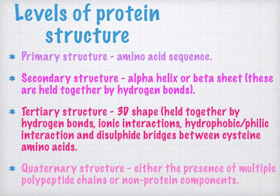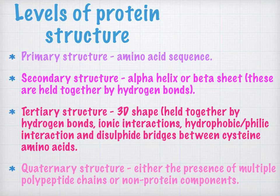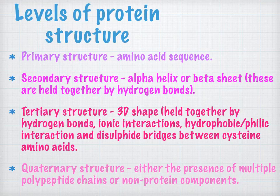There are different levels of protein structure you need to describe. Primary structure is simply the amino acid sequence when the protein is made by the ribosomes — 20 amino acids assembled in many different orders. Secondary structure refers to alpha helices, which look like coils, or beta sheets, which look like a pack of cotton wool — both held together by hydrogen bonds. Tertiary structure is the 3D shape of the protein, maintained by hydrogen bonds, ionic interactions, hydrophobic and hydrophilic interactions, and disulfide bridges between cysteine residues.